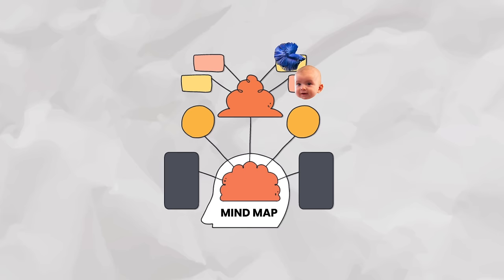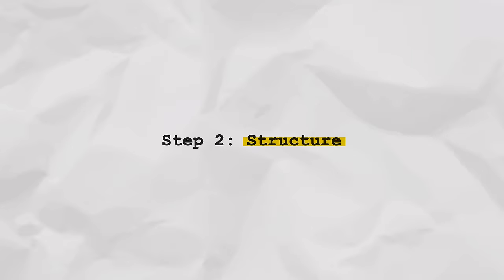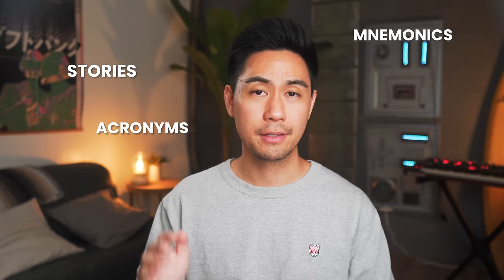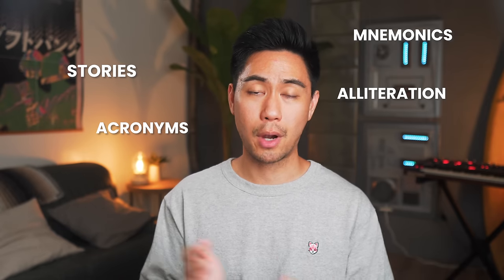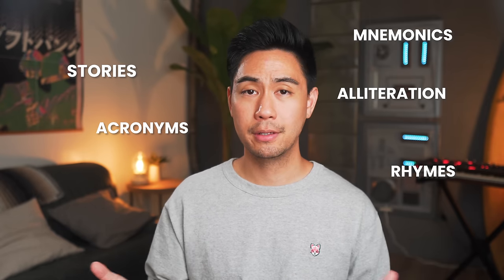Step two is to structure. There are many ways to do this because the brain is good at remembering things like stories, acronyms, mnemonics, alliteration, rhymes, and so on. What we want to do, once we've turned all of our info into images, is to link those images together using some sort of structure. In med school, we had to memorize the cranial nerves, which control our senses — so like one does smell, two does vision, and so on.